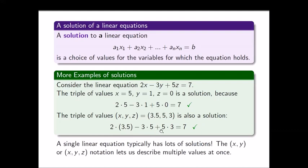The shorthand notation — x, y for a pair and x, y, z for a triple — is what we call pair notation and triple notation, and it just describes multiple values at once, as we'll see in upcoming examples.